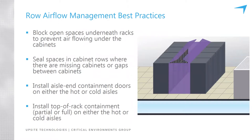These four bullets represent the key best practices for row or aisle-level airflow management. We'll get into much greater detail on each of these on subsequent slides, but here's a quick overview. The first is blocking off open spaces under the racks. Cabinets are often delivered with casters and levelers to aid with initial deployment, which by default creates a gap between the floor and the bottom of the rack — and blocking this gap is what we're referring to here.